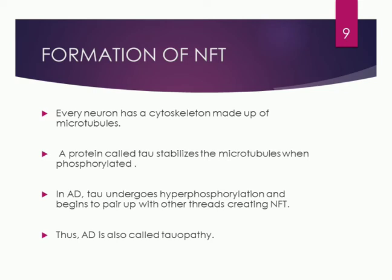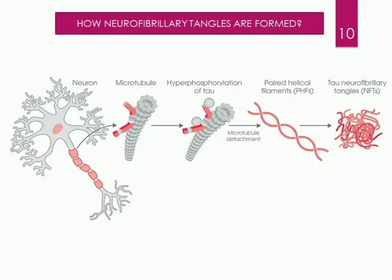From the diagram: the neuron has a cytoskeleton of microtubules. When tau undergoes hyperphosphorylation, the tau proteins pair up like helical filaments — called paired helical filaments (PHFs). The microtubules become detached and the paired filaments form tangles, which accumulate and build up inside the neuron. This is how neurofibrillary tangles (NFTs) are formed. This completes the detailed pathophysiology of Alzheimer's disease.